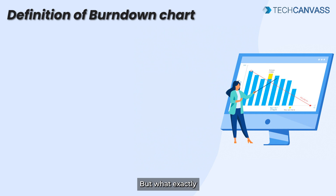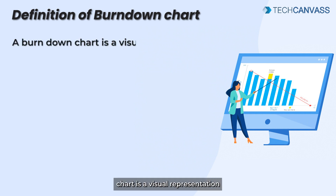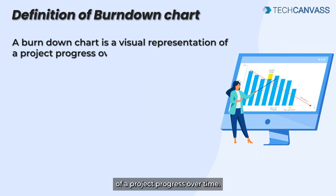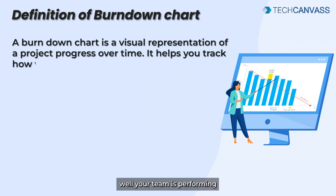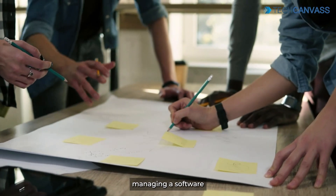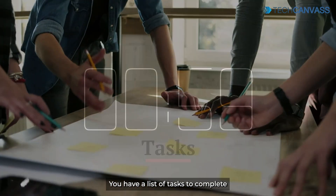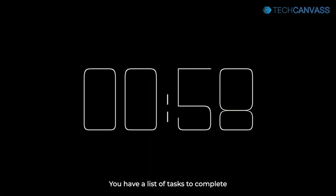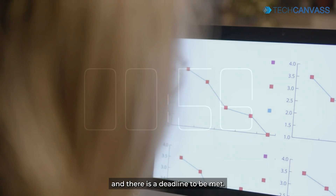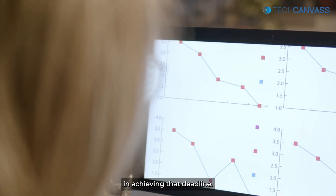But what exactly is a burn down chart? At its core, a burn down chart is a visual representation of a project's progress over time. It helps you track how well your team is performing against the planned work. Imagine you are managing a software development project — you have a list of tasks to complete and there is a deadline to be met. A burn down chart can help you in achieving that deadline.